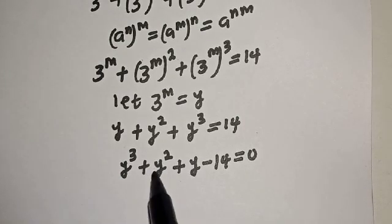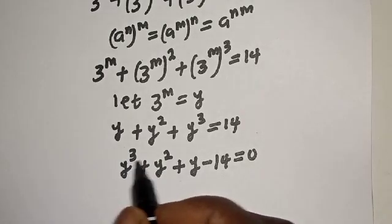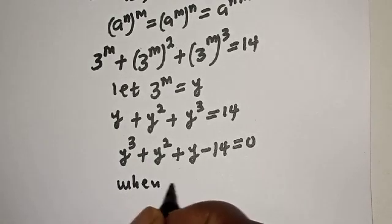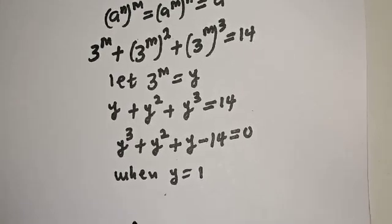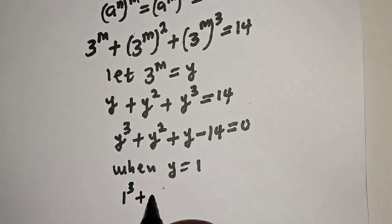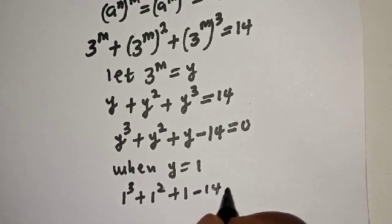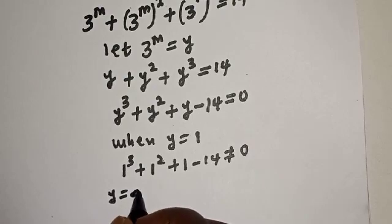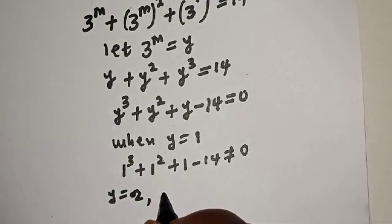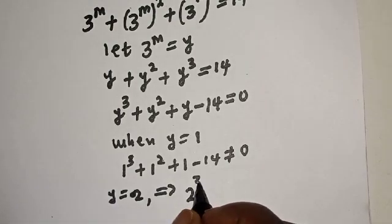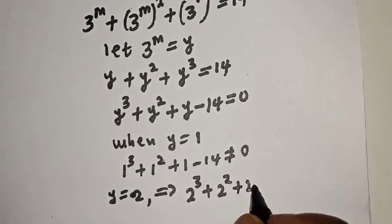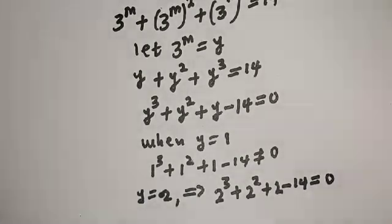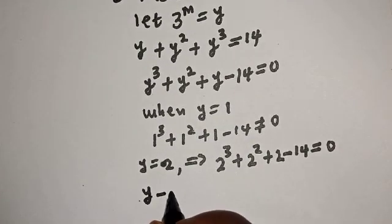We can use the remainder theorem to find the factors. Let's test y equal to 1: 1 cubed plus 1 squared plus 1 minus 14 is not equal to 0. Then test y equal to 2: 2 cubed plus 2 squared plus 2 minus 14 equals 0. Therefore y minus 2 is a factor.